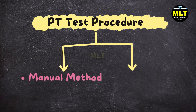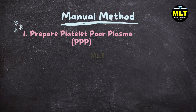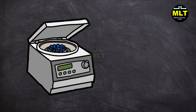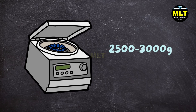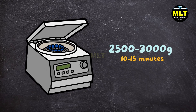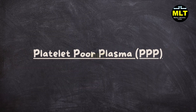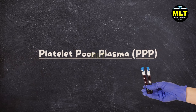Step-by-step PT test procedure — manual method. Step 1: Prepare platelet-poor plasma (PPP). Centrifuge the blood sample at 2500–3000 G for 10–15 minutes to obtain PPP. This is the base of our PT test.